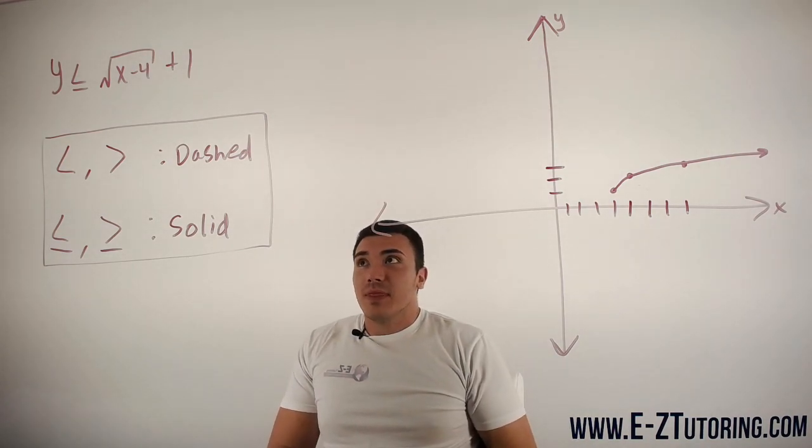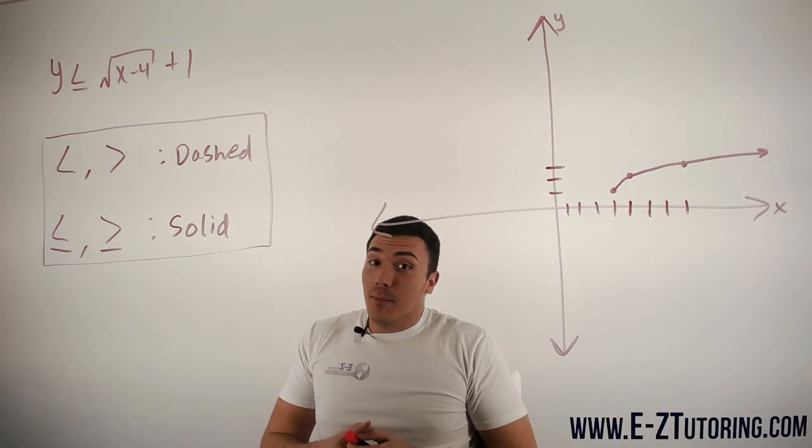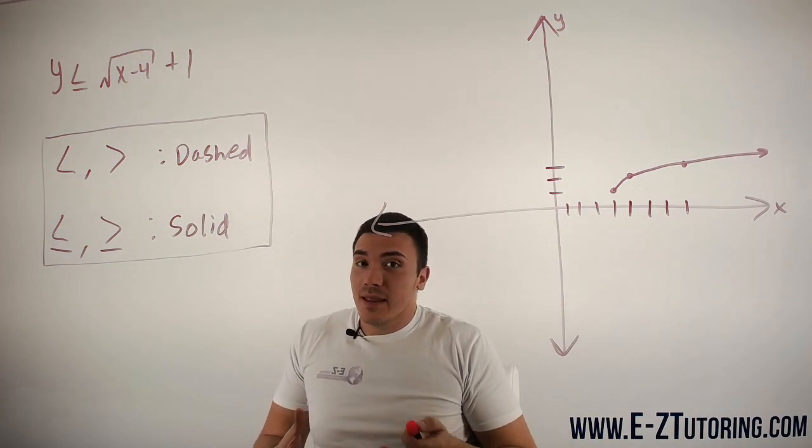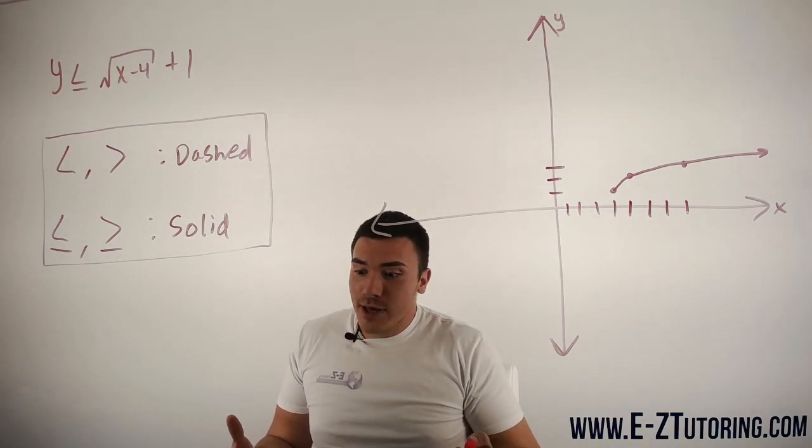After you've connected them, then you want to shade part of this graph. Now the question is, where do we shade?